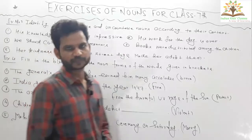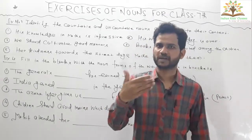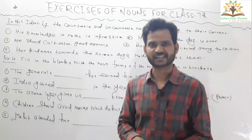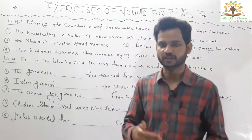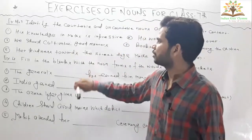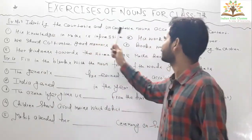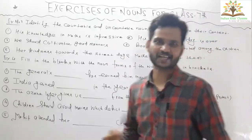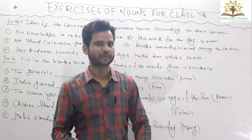I hope you have solved exercises three and four. Whatever marks you have gained, try to put them in the comment section below — I will personally check each one of your comments. Now, exercise number three: identify the countable and uncountable nouns according to their context.